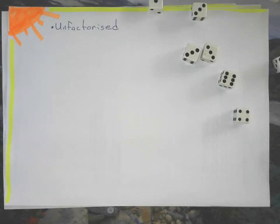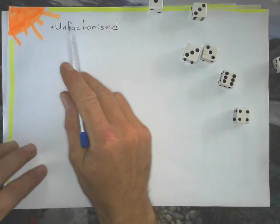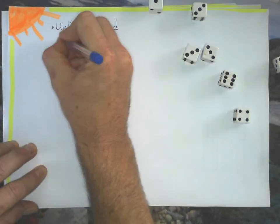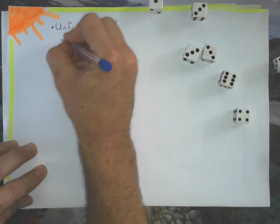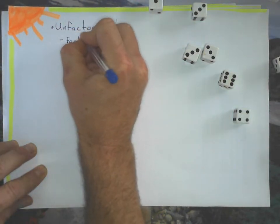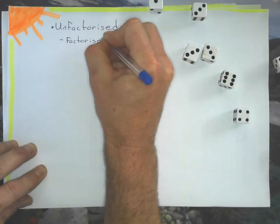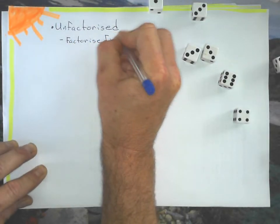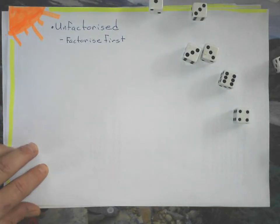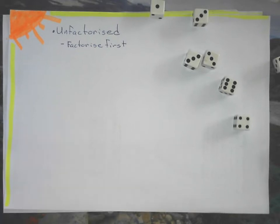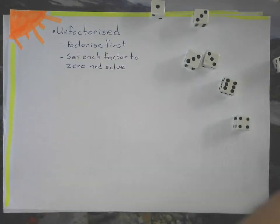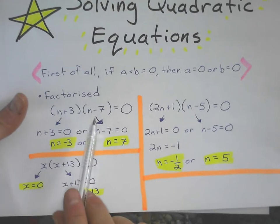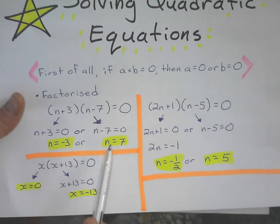Now we'll do some unfactorized examples. The thing you need to remember is that if it's unfactorized, what we're going to do is factorize it first. After we factorize it, we do the same thing and just set each factor equal to zero and solve.